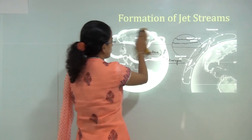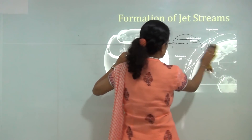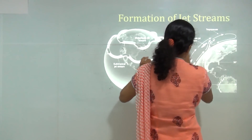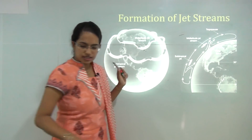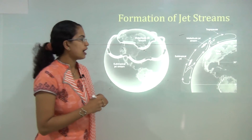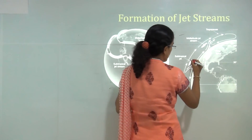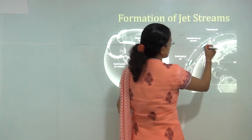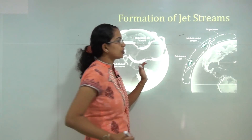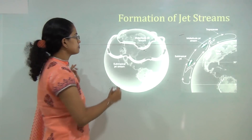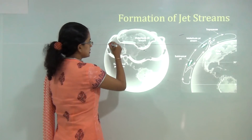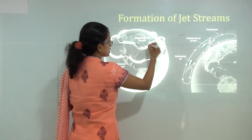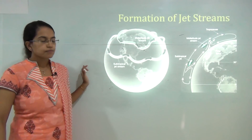Looking at the three cell diagram, you can see the regions where jet stream formation occurs — the subtropical jet stream formation and the mid-latitudinal or polar jet stream formation. These occur in certain paths, and as mentioned, these paths are meandering in nature.